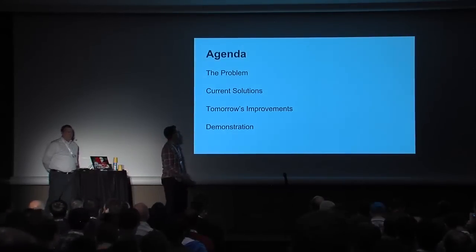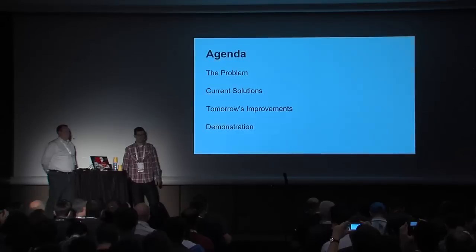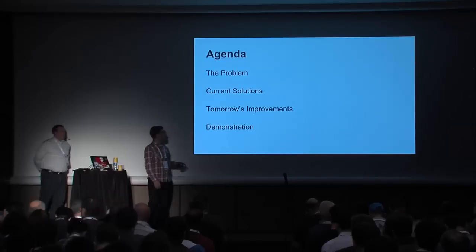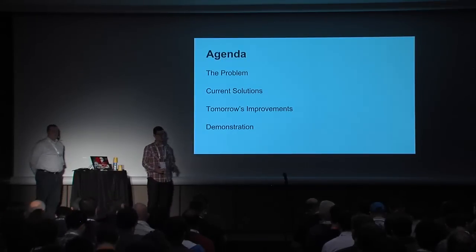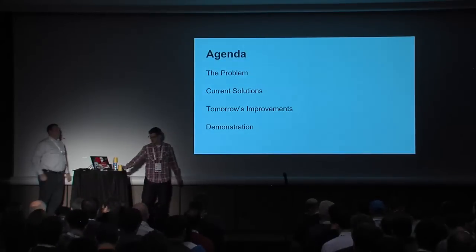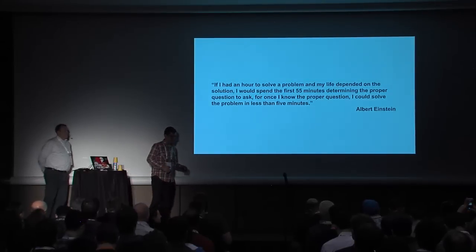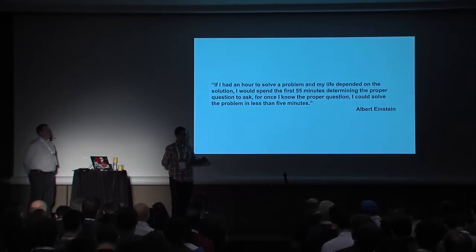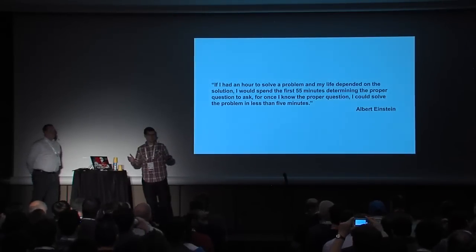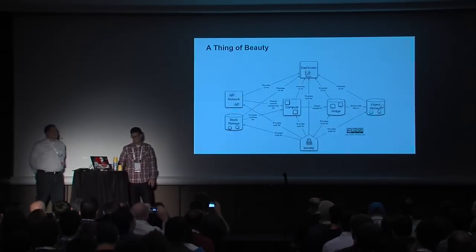Quick agenda — we've got a short amount of time. First, we're going to start by outlining what the problem is with OpenStack services today. We're going to talk about some of the current solutions that are out there. Then we're going to dive into improvements we think Docker, Kubernetes, and Atomic could provide. Finally, we're going to end with a live demo. It's really important to define the problem correctly — if you don't, you're never going to know what you actually need to solve.